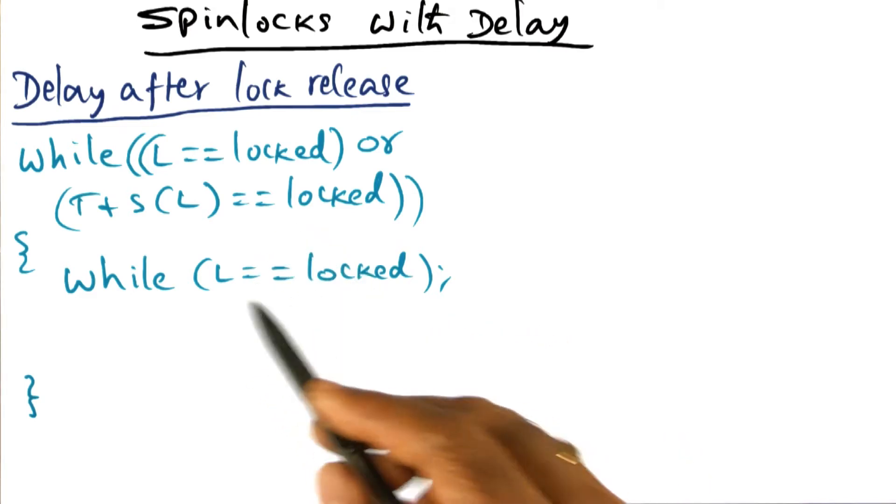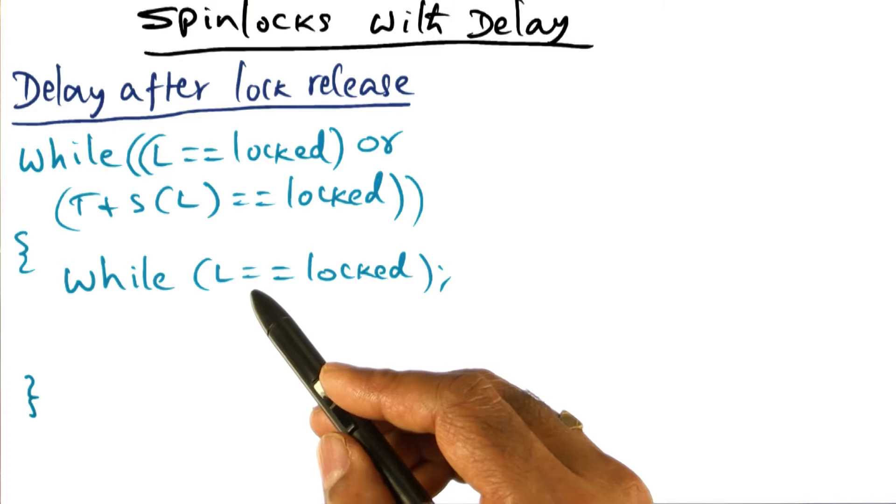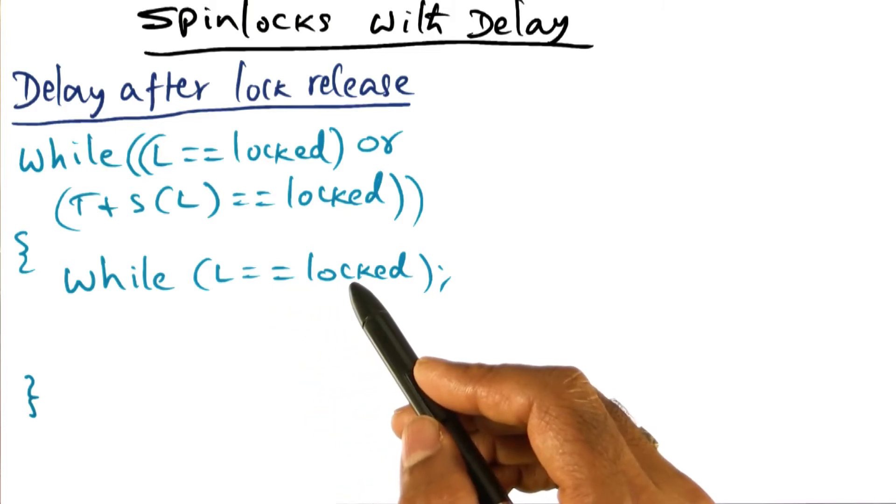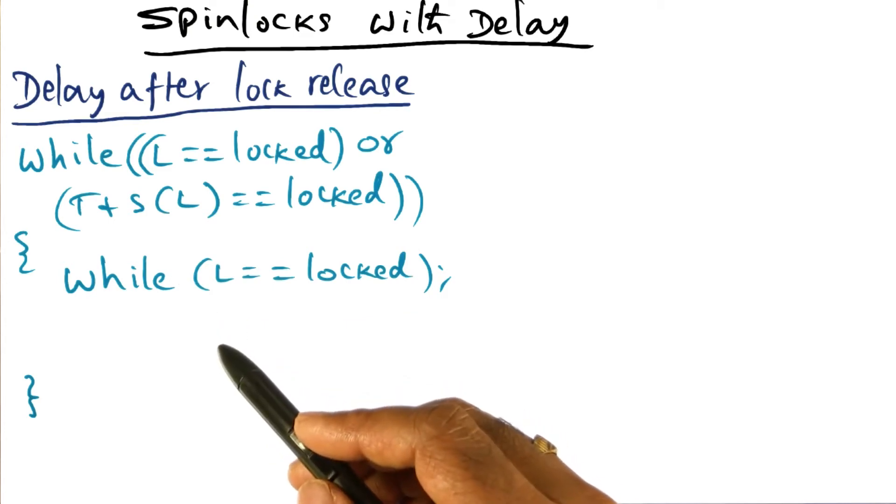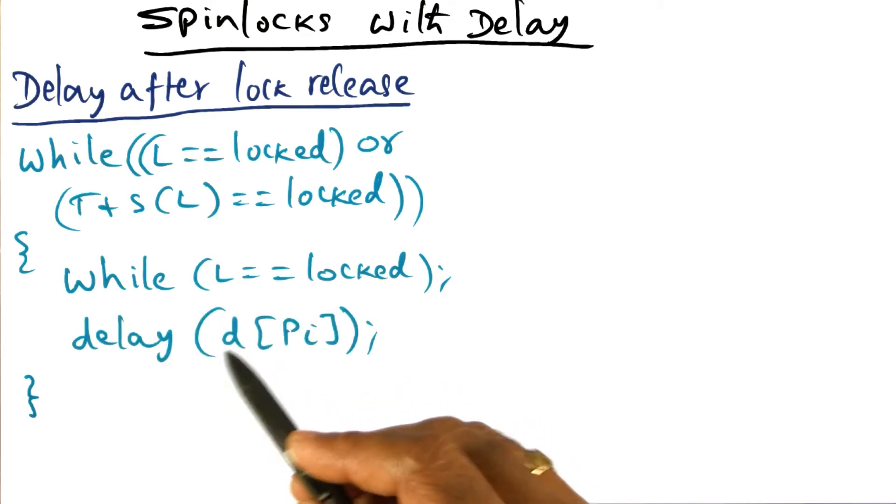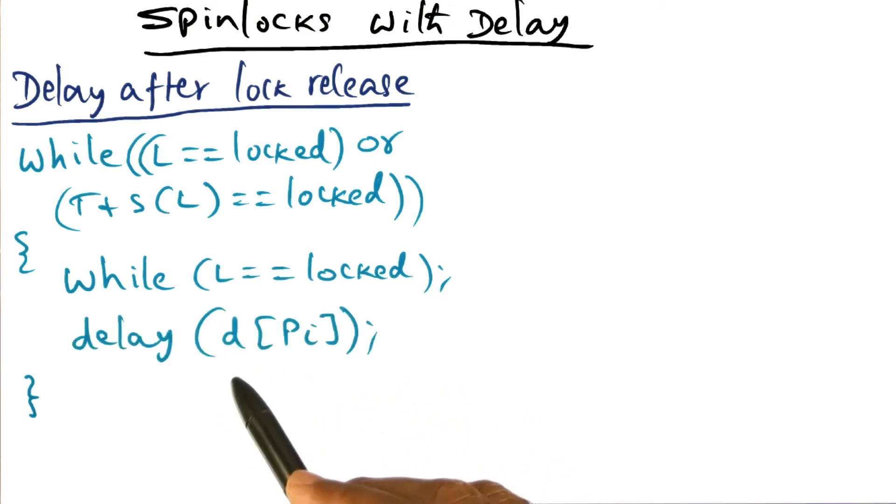But what we're going to do is instead of doing that, when we break out of this loop, meaning that the lock has been released, I'm not going to immediately check to see if I can get the lock. I'm going to delay myself by a certain amount of time. And you notice that the delay is conditioned by what processor ID I have. So every processor is waiting for a different amount of delay in order to contend for the lock.